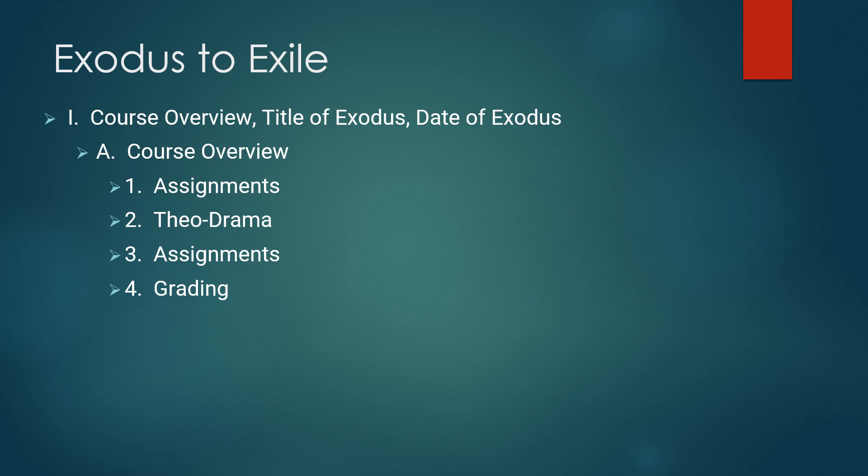Grading has three components, each one-third: quizzes on the reading, a midterm, and a final. There will also be some written work on Hebrew narrative. Notice the bold underlined statement: quizzes may not be made up or missed except in the case of extreme emergency. If you come in and there's a due date for a reading assignment and I give a quiz and you haven't read it, you can't simply ask to make it up next week.